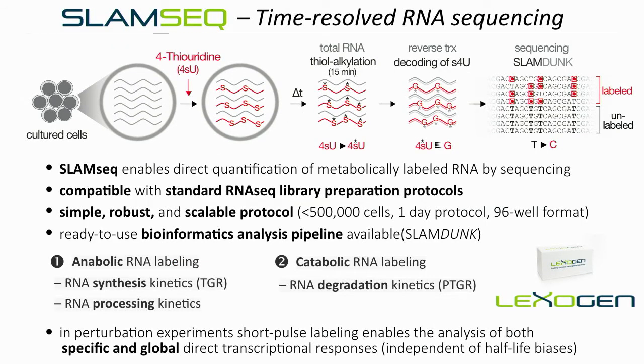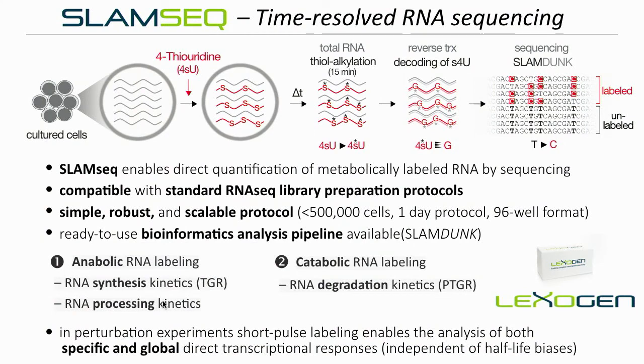To summarize, we have developed SLAM-Seq for time-resolved RNA sequencing. SLAM-Seq enables direct quantification of metabolically labeled RNA by sequencing, inducing T-to-C conversions, with a bioinformatic pipeline to uncover these in high-throughput sequencing data sets. This approach is compatible in principle with any RNA sequencing library preparation protocol — it's simple, robust, and scalable. We developed two approaches: anabolic RNA labeling, which enables measuring transcriptional output and RNA processing, and catabolic RNA labeling, which enables measuring RNA degradation.